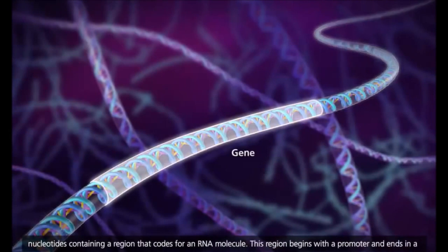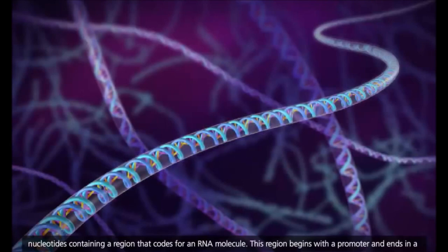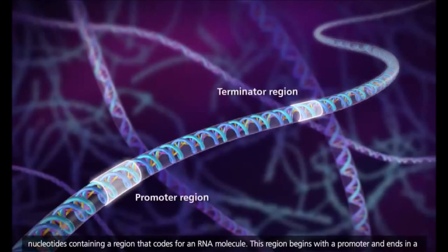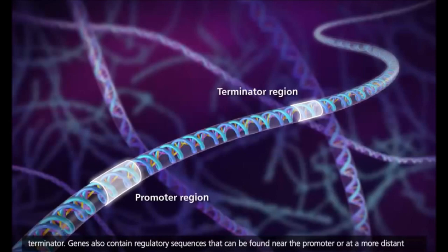A gene is a continuous string of nucleotides containing a region that codes for an RNA molecule. This region begins with a promoter and ends in a terminator. Genes also contain regulatory sequences that can be found near the promoter or at a more distant location.